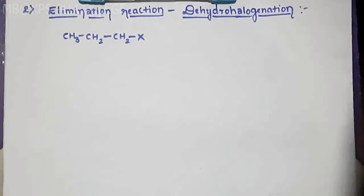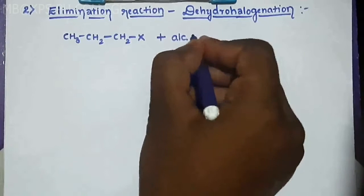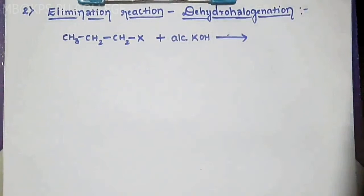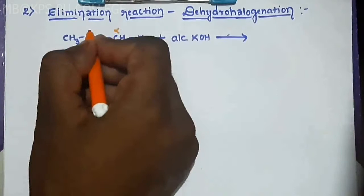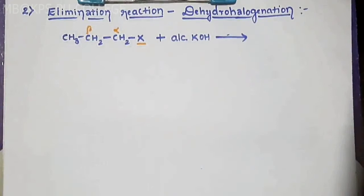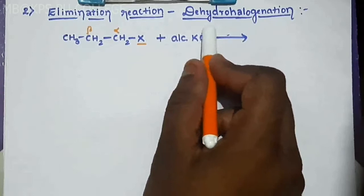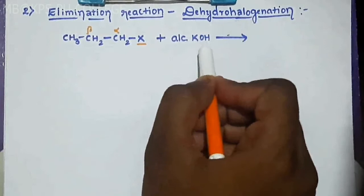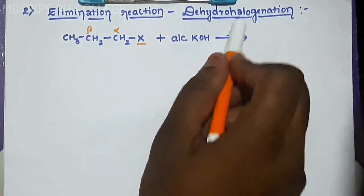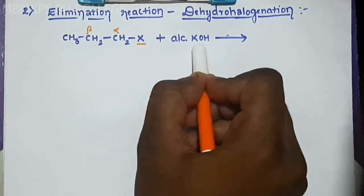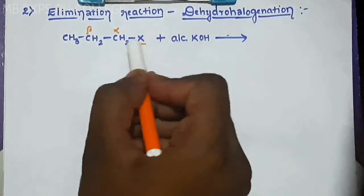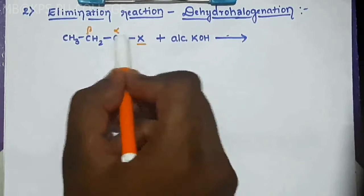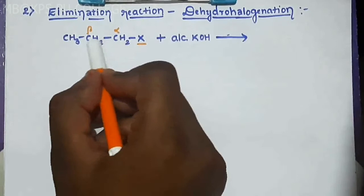Consider the reaction: CH3-CH2-CH2-X reacted with alcoholic KOH in ethanol. The role of alcoholic KOH is as a dehydrohalogenating agent. In this reaction, the halogen is on the alpha carbon, and the adjacent carbon is the beta carbon.